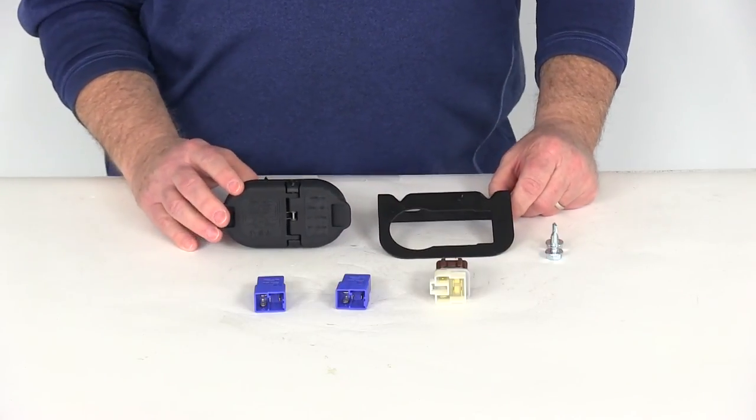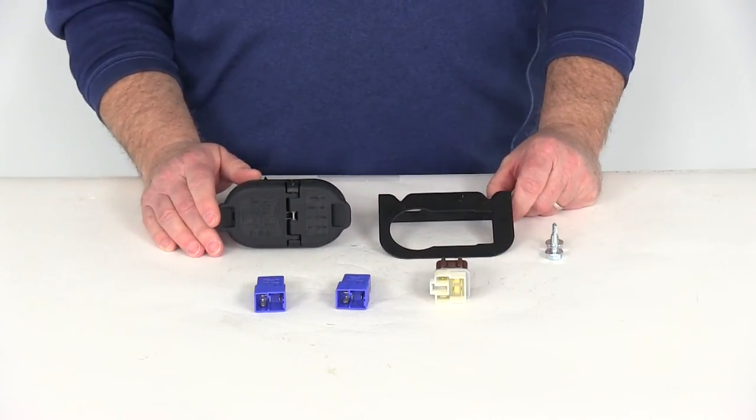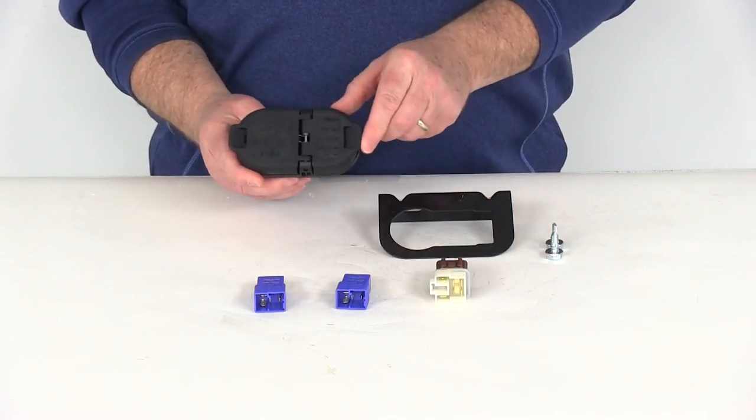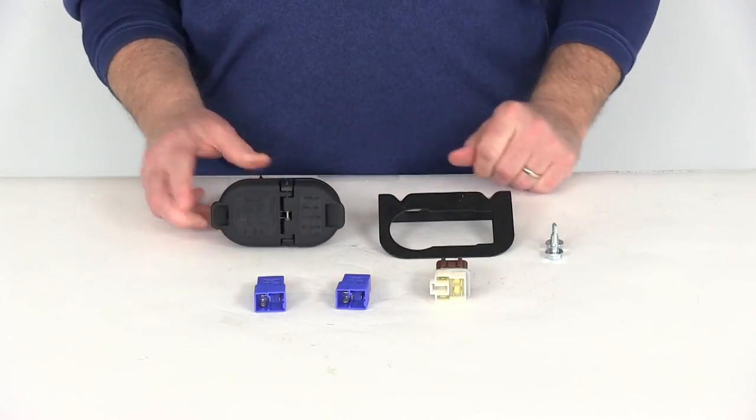That should do it for the review on part number N-40975, the Hopkins factory style seven way and four way flat vehicle and trailer connector with the included relays.